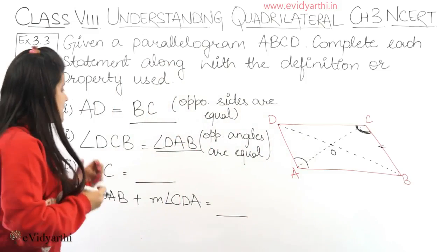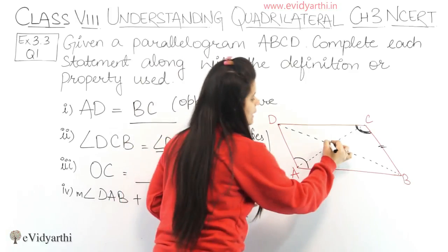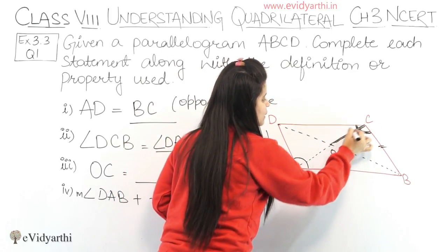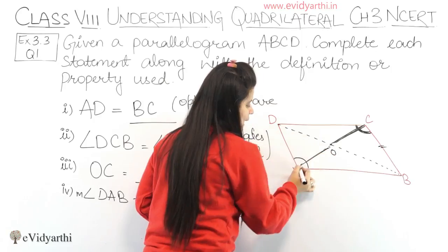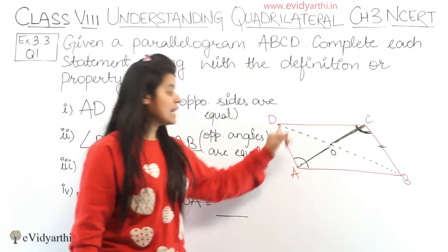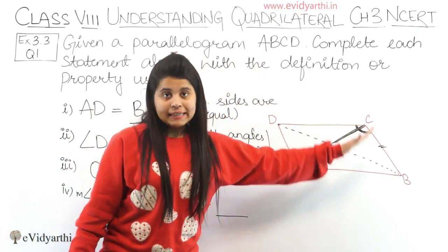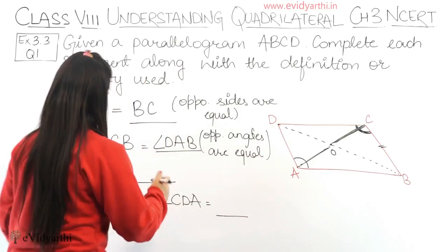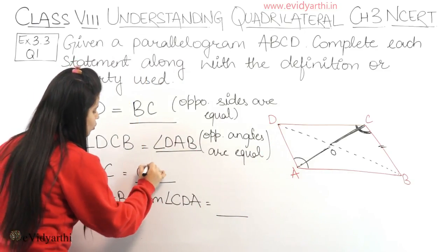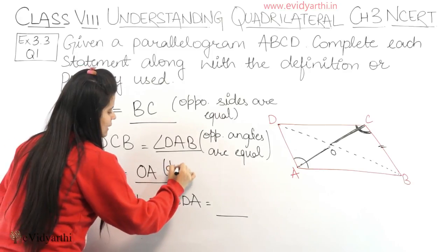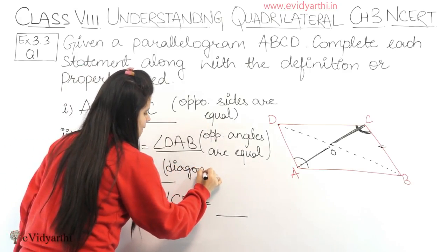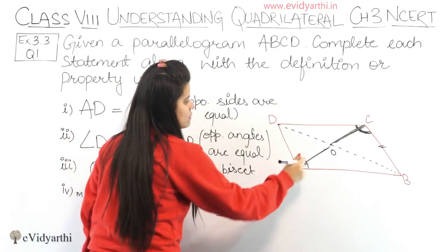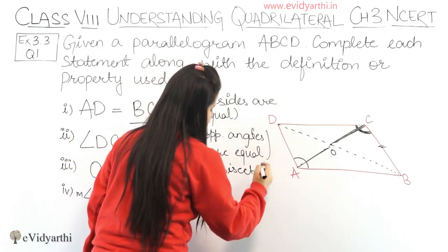Next we have OC equals to — OC is from here to here. This will be equal to OA. Why? Because in a parallelogram the diagonals bisect each other, meaning the diagonals cut each other into equal parts. So OC equals OA.